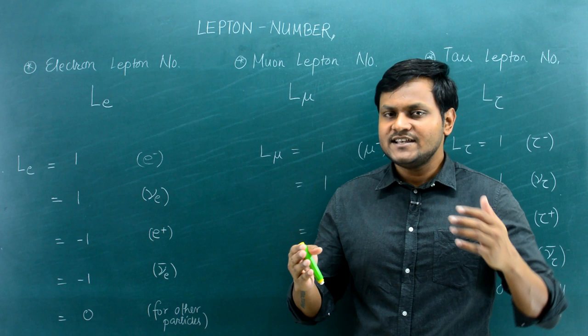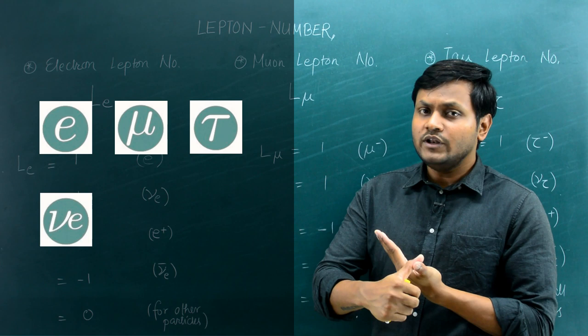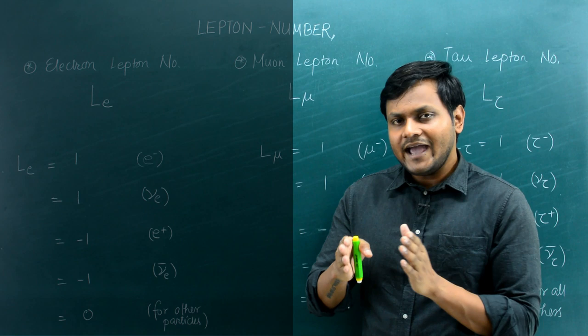The lepton particles essentially consist of six particles: the electron, the muon particle, the tau particle, and their associated neutrinos — the electron neutrino, muon neutrino, and tau neutrino. So there are six particles and their antiparticles which comprise the lepton particles.